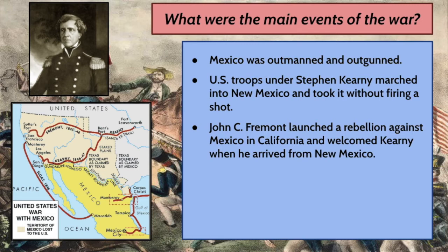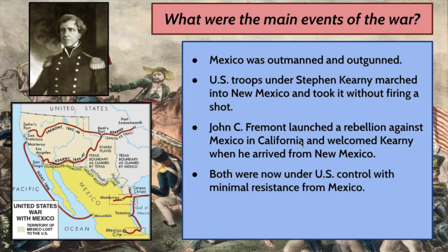John C. Fremont was another general who went west to California and launched a rebellion against the Mexican government there. Governor Vallejo of Mexico was defeated. Kearney established what was known as the Bear Flag Republic, and for a very short time California was actually an independent country, or so it claimed. Kearney and Fremont basically established U.S. control over California — Kearney in the Southern California area of San Diego and Los Angeles, and Fremont in Northern California. Both California and New Mexico were now under U.S. control with very little resistance from Mexico.